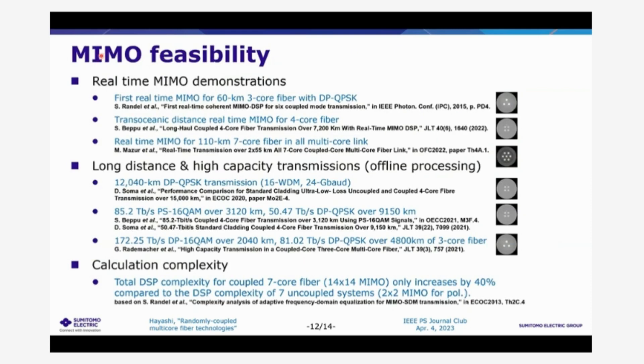Also for proving the MIMO feasibility, there are many demonstrations from various research groups. And for the real-time MIMO demonstration, three core fiber, four core fiber and seven core fiber real-time MIMO transmission was achieved with real-time MIMO DSP. Also for long-distance and high-capacity transmission with offline processing, using four core fiber and three core fiber, very long distance and high capacity transmission was demonstrated with coupled multi-core fibers.